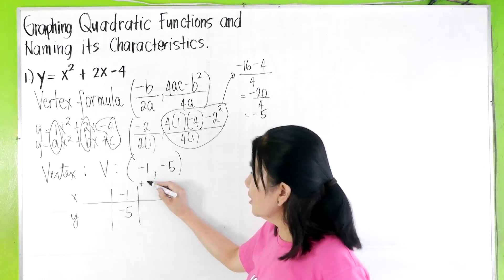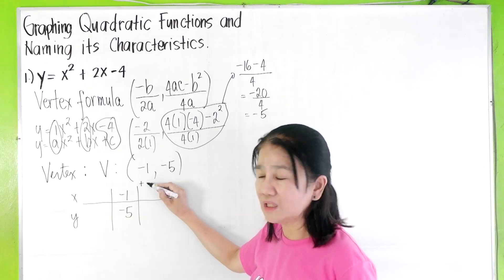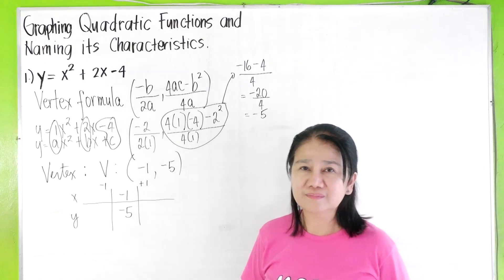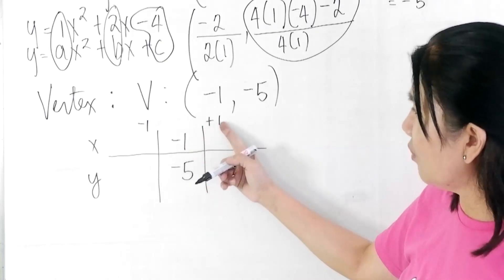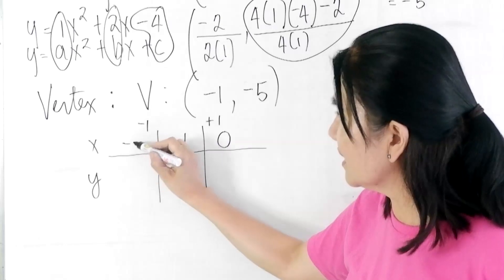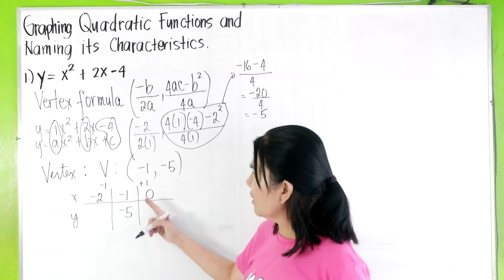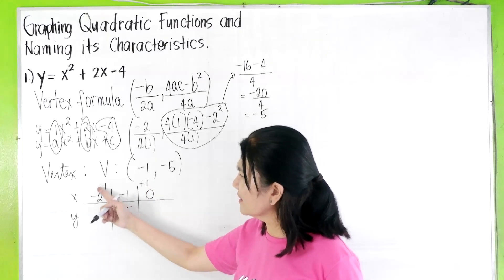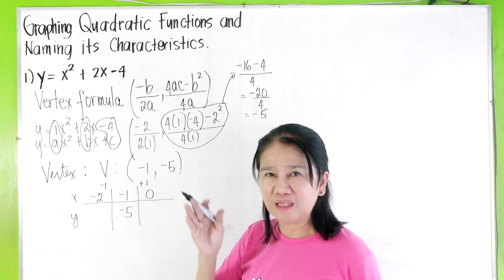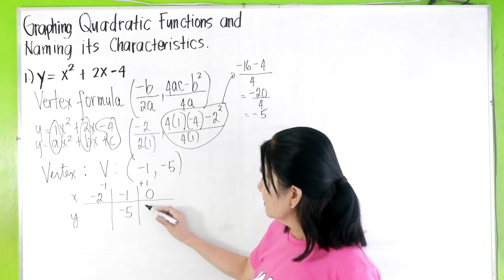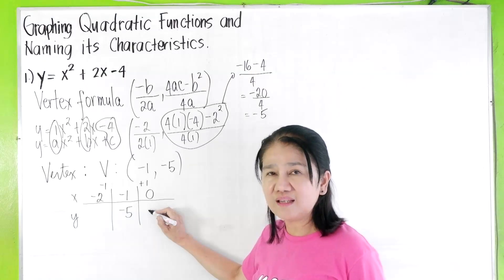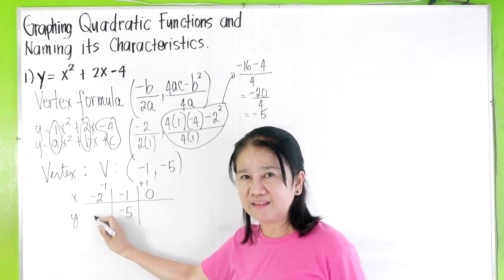Then, you add a number, the same number to the right and to the left. For example, here, you can add +1, but every you add, you subtract. So -1 + 1 gives you 0, and -1 - 1 gives you -2. Why am I adding this and subtracting the same number to both sides? Because a parabola is symmetrical to the right and to the left.